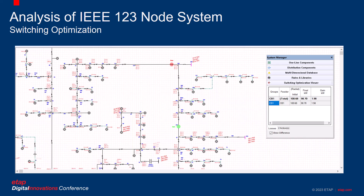Having established a baseline validity of our model, let us look at some standard DMS operations. We first look at switching optimization. Switching optimization is a module in ETAP that gives you the ability to reconfigure switches and get the best possible network depending on the objective. The chosen objective here is minimize losses. As you can see here, one switch near bus 197 opens up and the other switch near bus 300 closes in order to provide these 10 customers power through a different route. By performing this action, we are able to gain nearly 2 kilowatts of power savings in terms of losses, and notice that system radiality is still maintained.